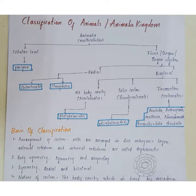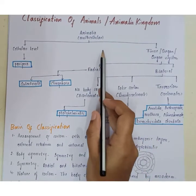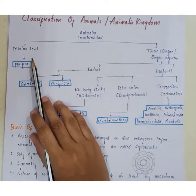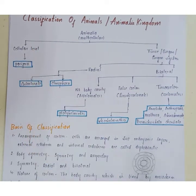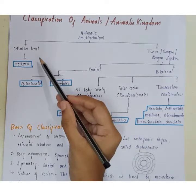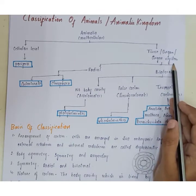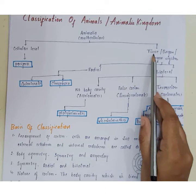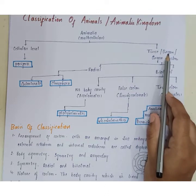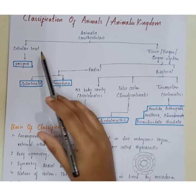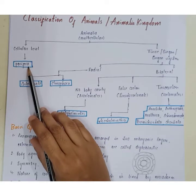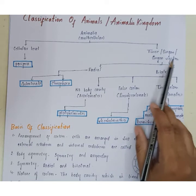Animals are classified based on their characteristics. Based upon cellular organization, Kingdom Animalia is further classified into two types: cellular level, and tissue/organ/organ system level. At the cellular level, cells are not organized to form tissues — they are arranged loosely. At the tissue/organ level, groups of cells with similar functions form tissues, groups of tissues form organs, and groups of organs form organ systems. Based on cellular level, Porifera is classified separately.